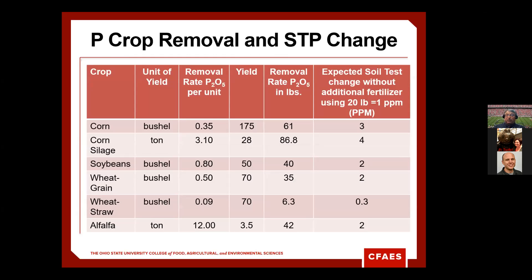It takes a while to lower a soil test. For corn using a crop removal rate of 0.35 with a 175-bushel yield, we remove about 61 lbs of phosphorus — that only drops the soil test by about 3 ppm, figuring 20 lbs of fertilizer equals 1 ppm. So if you're really high in phosphorus levels, it'll take a while to bring it down. The university recommendations account for this in their crop removal and buildup guidance.